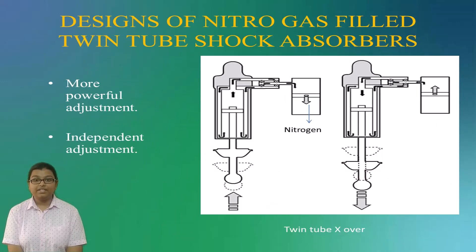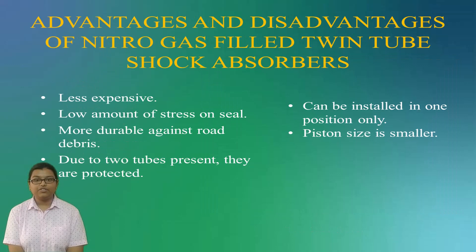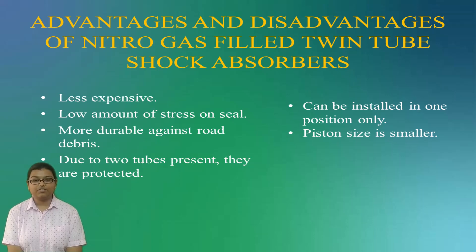Now, coming to the design known as TwinTubeXO. Like the reservoir shock design, the TwinTubeXO has a separate reservoir in which low-pressure nitrogen gas is present. Some benefits provided by TwinTubeXO are: more powerful adjustment due to the much larger amount of fluid passed through the valves, and independent adjustment, meaning a change on one adjuster does not affect the other's flow. Various advantages of Nitro-Gas Twin-Tube Shock Absorbers are: they are less expensive; less stress on the seams due to low-pressure nitrogen gas; more durable against road debris; and external damage to the shell case does not affect the inner cylinder.